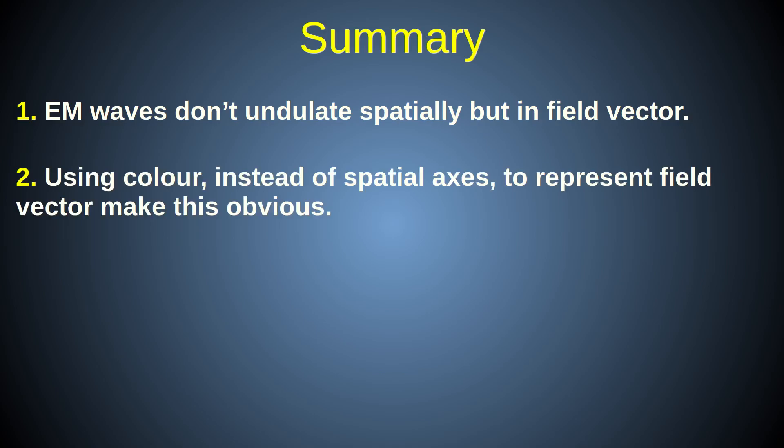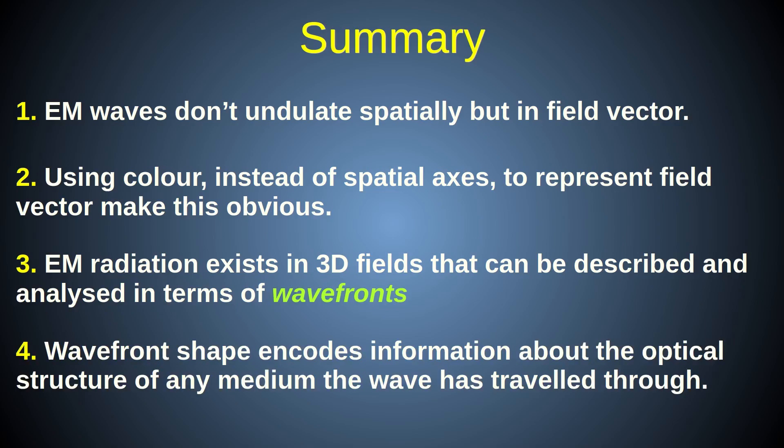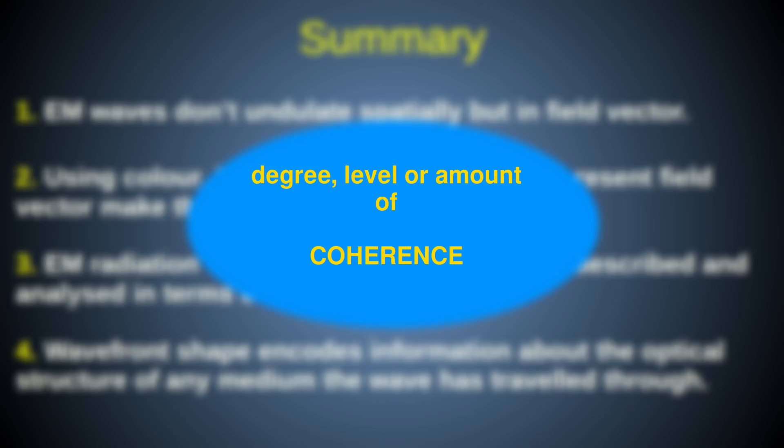In this video, I explained why using spatial axes to plot field vectors can be misleading, and I demonstrated an alternative way to visualize the electric and magnetic field fluctuations using intensity or color changes. I also explained the concept of a wave front and showed how wave fronts can have a very complicated shape that encodes information about the optical structure of any medium the EM radiation has passed through. In my next video in this series, I'll talk about a statistical property of a collection of EM waves known as their degree of coherence.